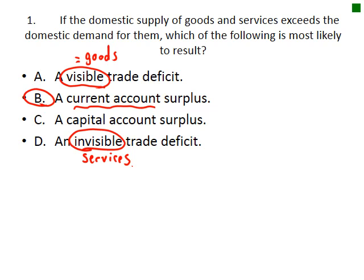If the domestic supply of goods and services exceeds the domestic demand for them, which of the following is most likely to result? If we are making more than we're consuming, most likely we're going to be exporting the surplus, and it is the current account which is affected — not the capital account. So we would say a current account surplus.